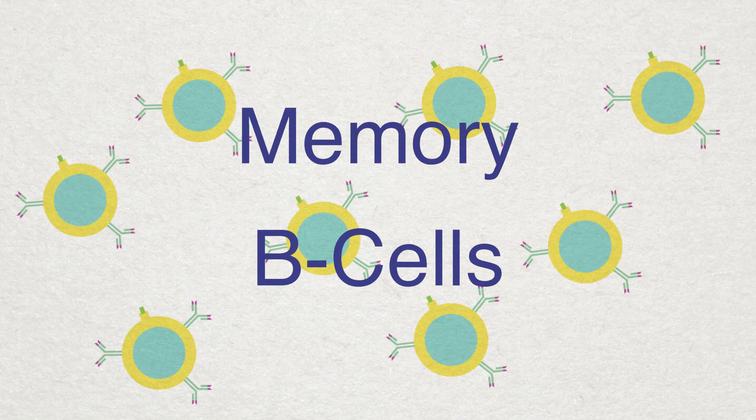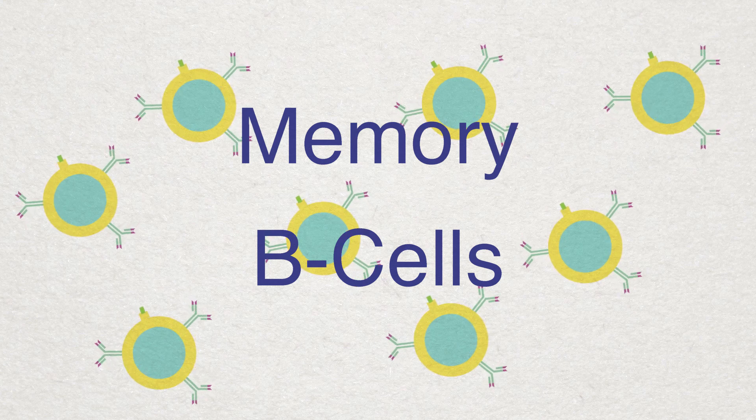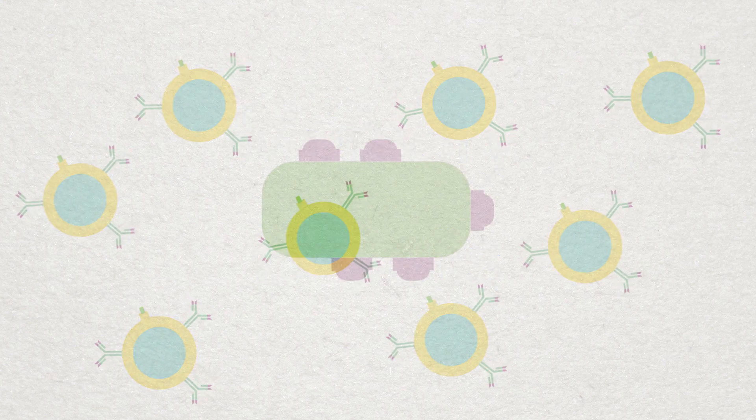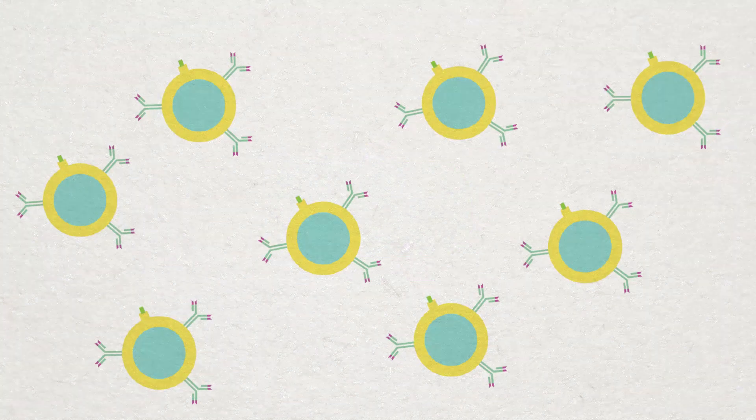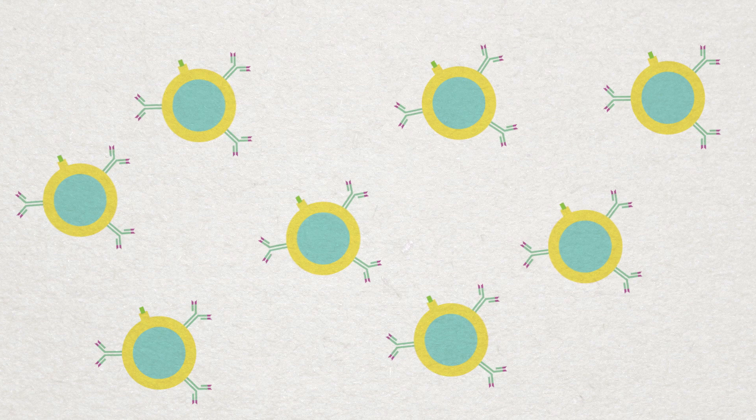Memory cells are involved in the secondary immune response. If this same antigen enters the body again in the future, thousands of memory cells are available to initiate a quick reaction, destroying the antigen before any signs or symptoms can occur. These cells can last for decades.